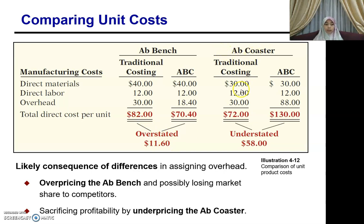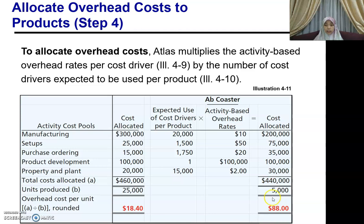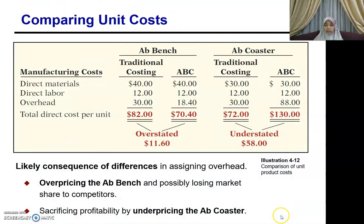Now what about AppCoaster? As mentioned, direct material and direct labor remain the same; the difference lies in the overhead treatment. Under the traditional method, overhead is RM30. But using activity-based costing, the overhead for AppCoaster is RM88, giving a total cost of RM130 under ABC. Under the traditional method the cost is only RM72, so you have understated the cost by RM58.